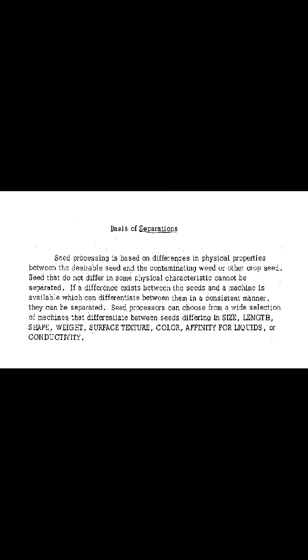The Basis of Separations: In general, seed processing is based on differences in physical properties between the desirable seed and the contaminating weed or other crops. Seeds that do not differ in some physical characteristics cannot be separated. If a difference exists between the seeds and a machine is available which can differentiate between them in a consistent manner, they can be separated.